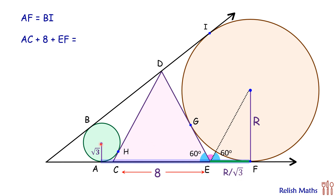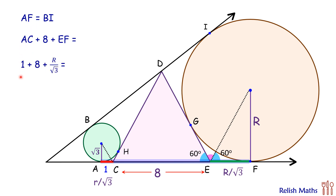Since tan(60) is √3, EF becomes r over √3. Similarly, for the green circle, joining its center to external point C gives 60 degrees, and the length AC equals radius over √3. Since the radius of the small circle is √3, AC equals √3 over √3, which is 1 centimeter. Thus the total length AF is 1 plus 8 plus r over √3 centimeters.